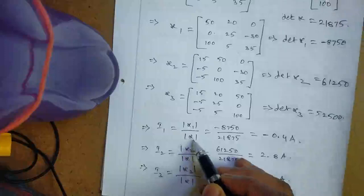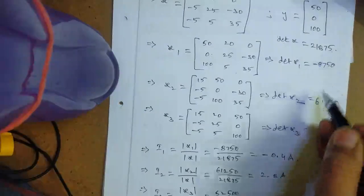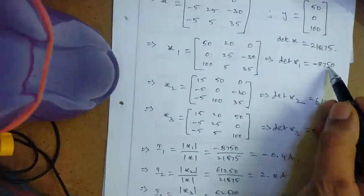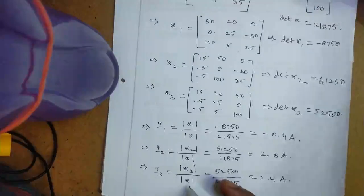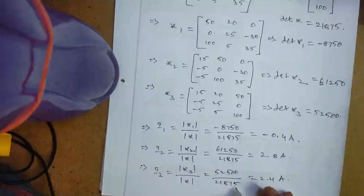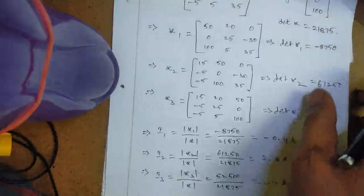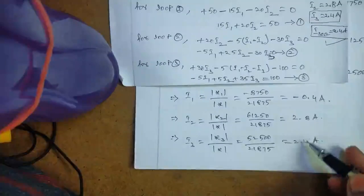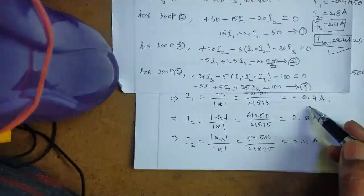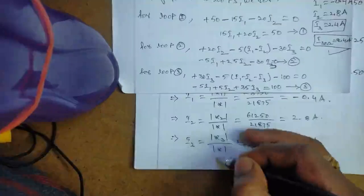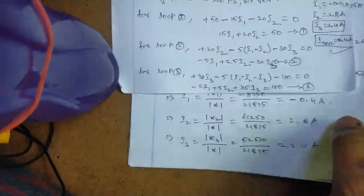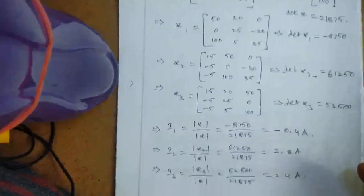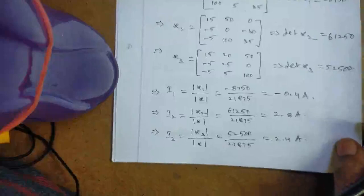i1 equals det(X1) divided by det(X), that is minus 8750 divided by 21875. i2 equals det(X2) divided by det(X), that is 61250 divided by 21875. i3 equals det(X3) divided by det(X), that is 52500 divided by 21875. These are the values of i1, i2, and i3: approximately minus 0.4, 2.8, and 2.4, calculated with the help of Cramer's rule.